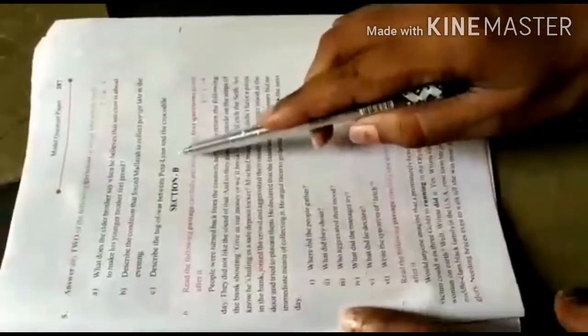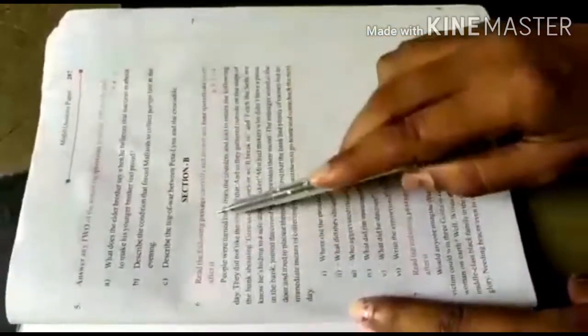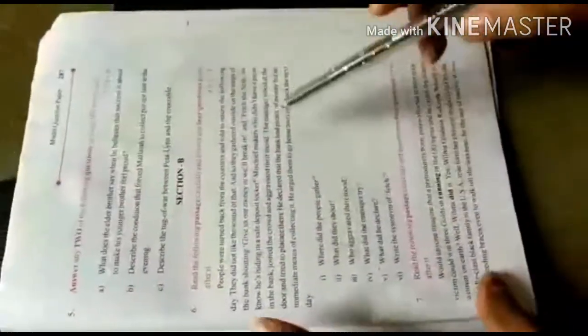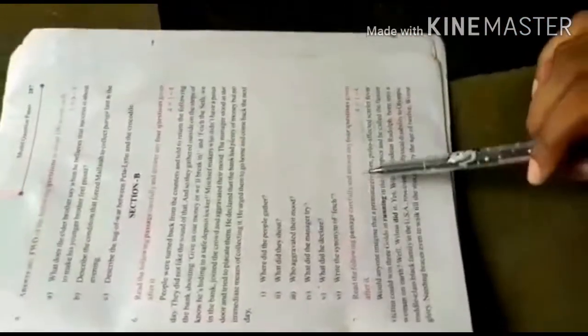Section B. Sixth bit is comprehension passage - a passage from short stories with annotations. Seventh bit is comprehension passage - an unseen passage.